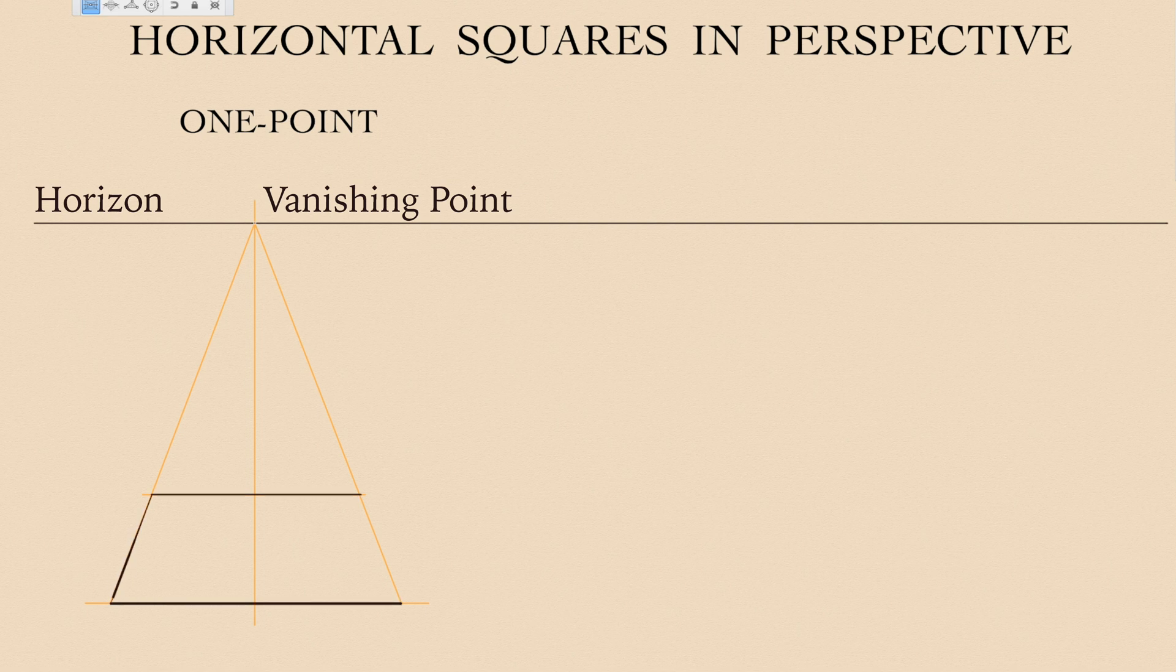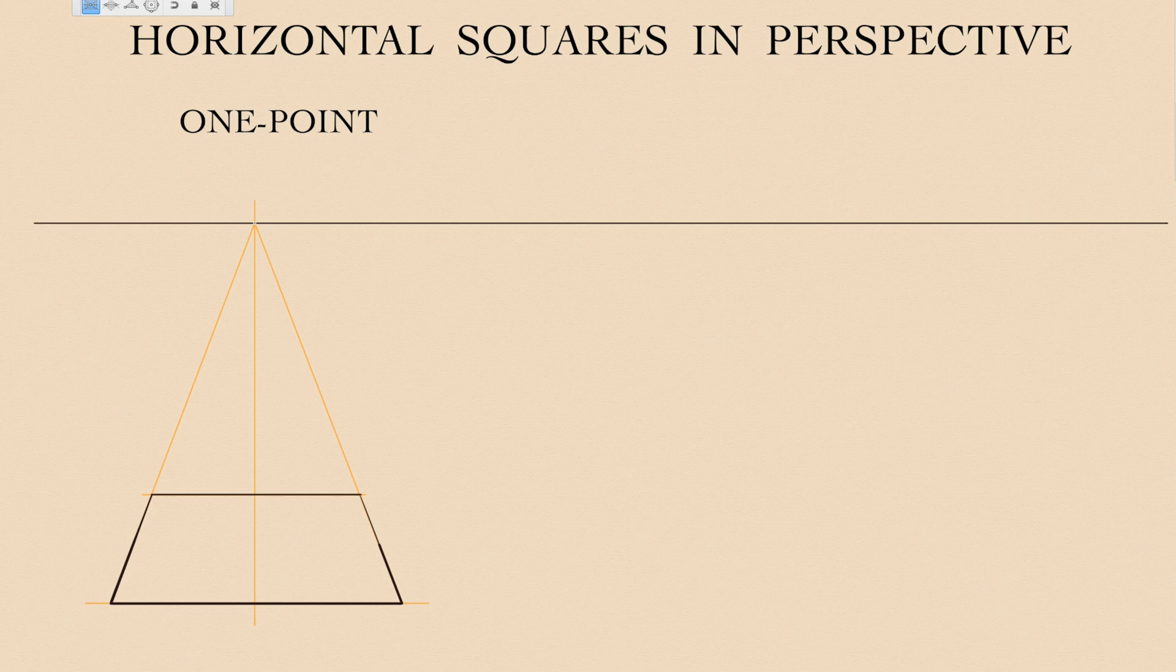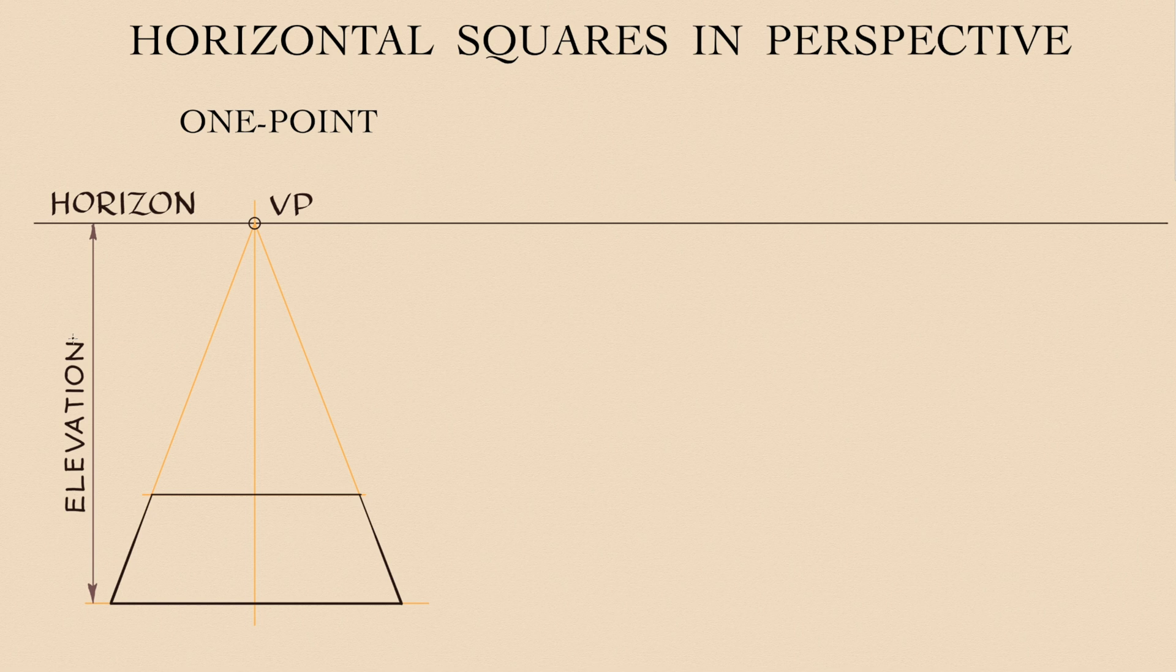A square in one-point perspective follows those vanishing lines. The distance to the horizon is elevation. So the depth of a square depends on how high the point of view is.